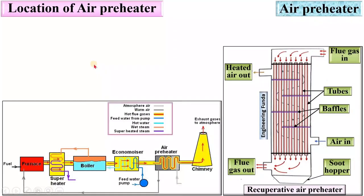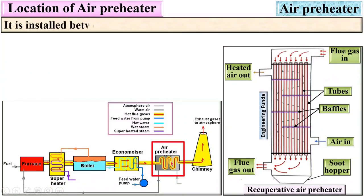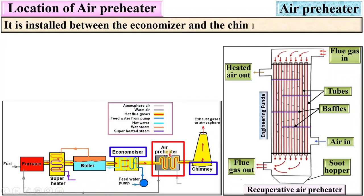The location of the air preheater: as you can see here, it is installed between the economizer and the chimney.